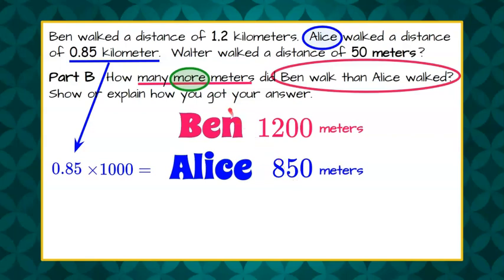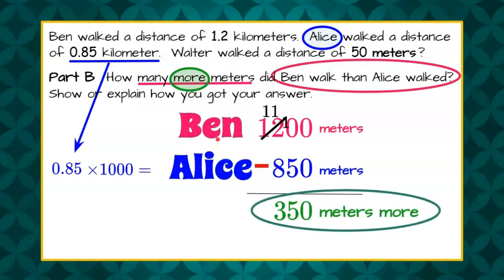Now we're not done because the question asked how many more meters did Ben walk. So I'm going to subtract Alice's 850 meters from Ben's 1,200 meters. And 0 subtract 0 is 0. Now I need to borrow because I cannot take 5 away from 0. So I'm going to cross out my 12, make it 11, and I've borrowed my 1. 10 subtract 5 is 5, 11 subtract 8 is 3. So at the end, we can find out that Ben walked 350 meters more than Alice for the answer to part B.